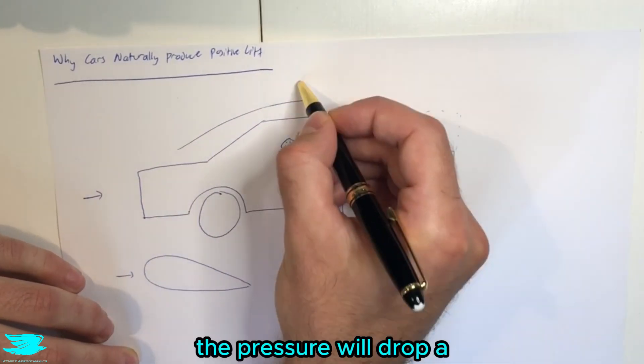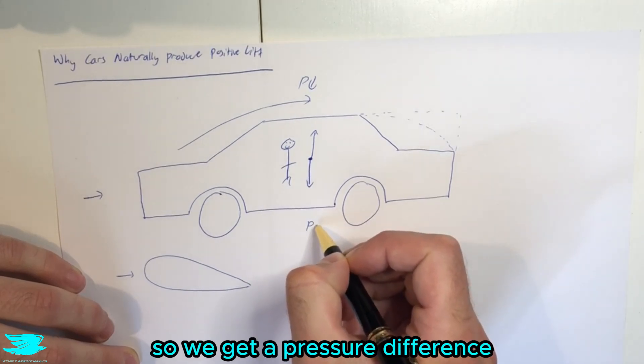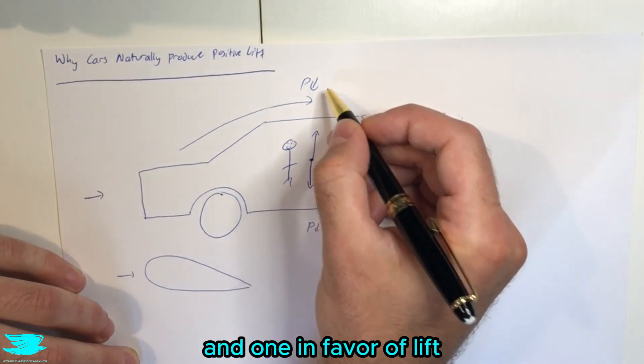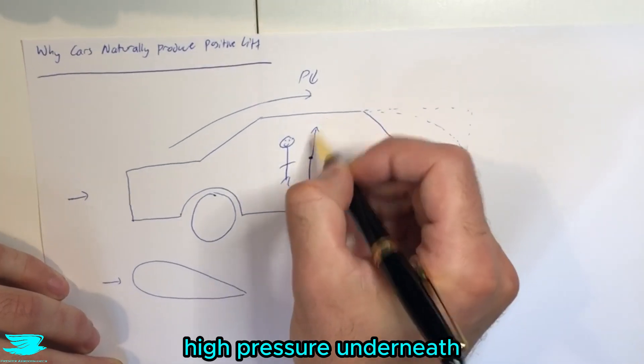And as such, the pressure will drop a lot here, as opposed to here where the pressure won't drop nearly as much. So we get a pressure difference in favor of lift. We have lower pressure on top, higher pressure underneath, we get lift being produced.